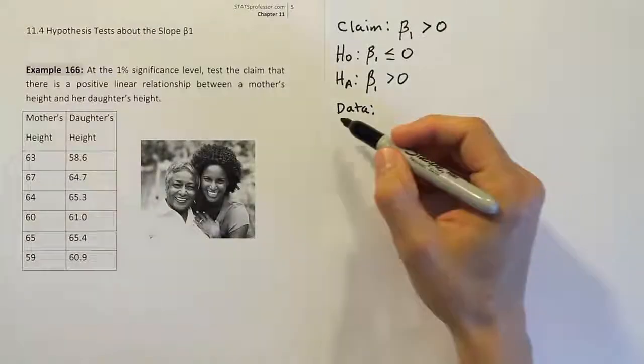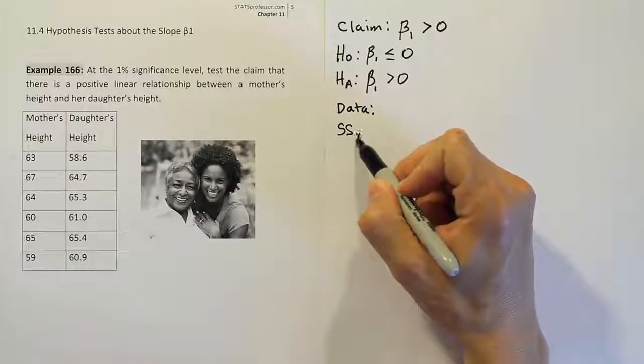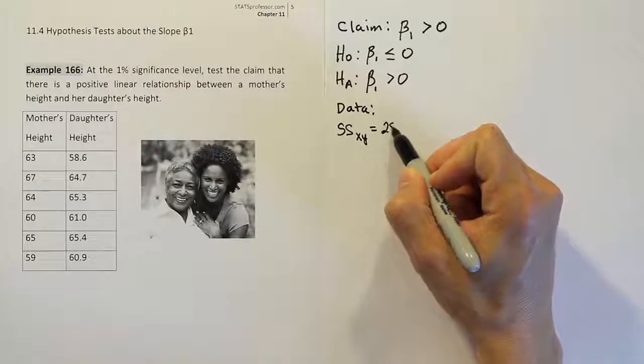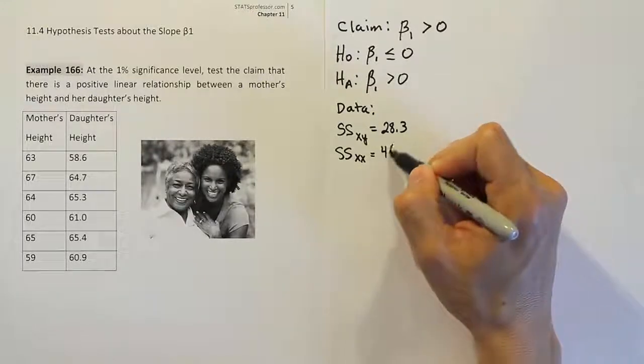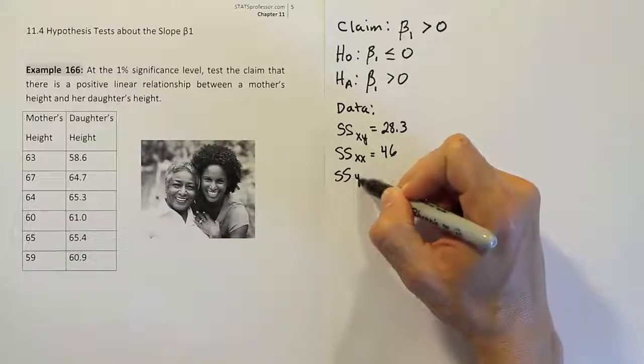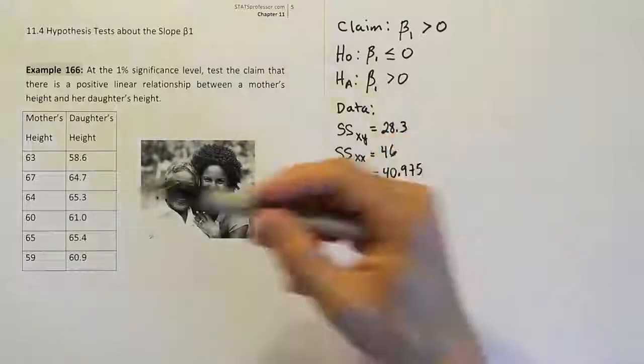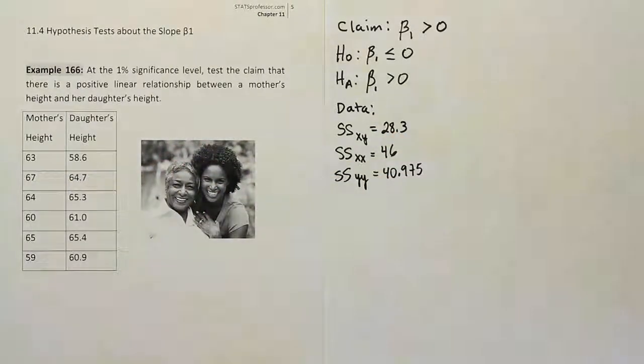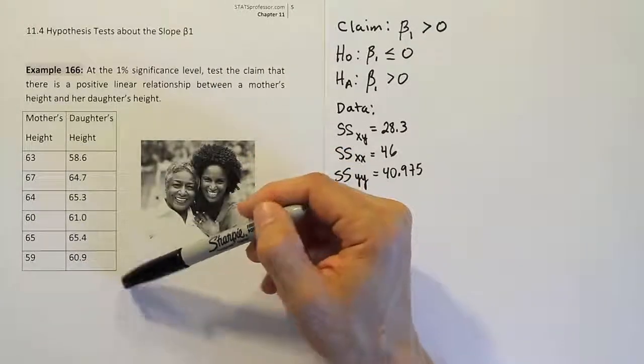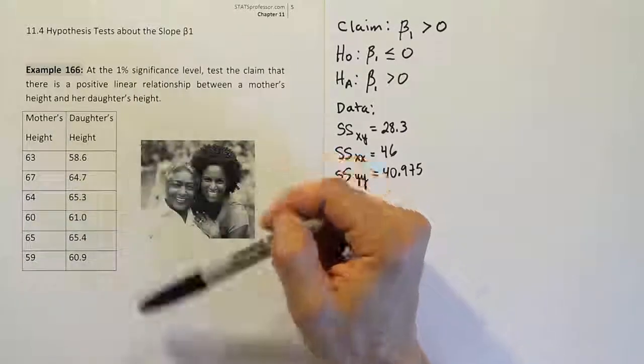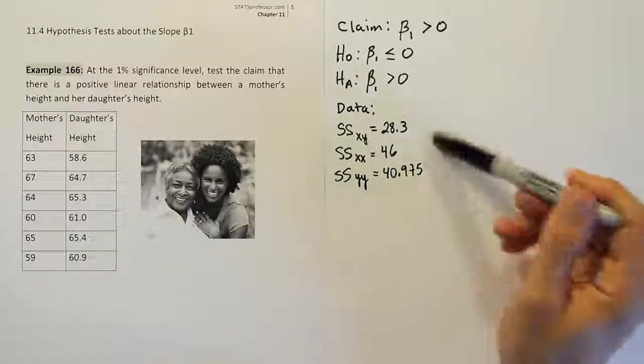So what I'm going to do is just show you essentially the answers for some of the values that we're going to need. So the things we're normally going to need, and hopefully your professor will provide you with at least this much on the test when you have to do this. You'll have the sum of squares for xy, and I'm going to give that to us, so it's 28.3 in this case. And then we'll have the sum of squares for the x values, and that's going to be 46. And then finally, we're going to need the sum of squares for the y values. And in this case, that's going to be 40.975. So this was tabulated from this data in the traditional way we normally do. And with all those totals, we can then fill in each of these individual formulas. And we've done that before in previous problems, so I'm going to start from here.